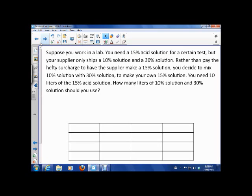So here's the first problem. Suppose you work in a lab. You need a 15% acid solution for certain tests, but your supplier only ships a 10% solution and a 30% solution. Rather than pay the hefty surcharge to have the supplier make the 15% solution, you decide to mix the 10% solution and 30% solution to make your own 15% solution. You need 10 liters of the 15% acid solution. How many liters of 10% solution and how many liters of the 30% solution should you use?